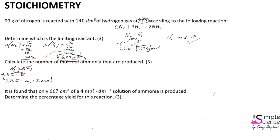For this question, one mark is awarded for identifying the correct ratio, one mark for using the limiting reactant correctly, and one mark for correctly stating the number of moles of ammonia formed.